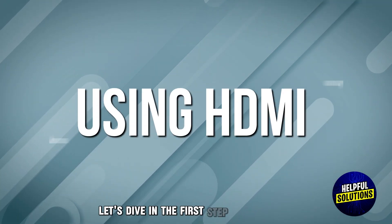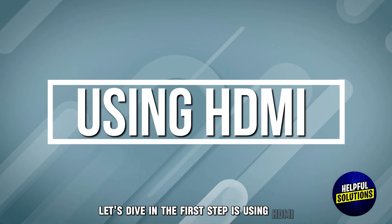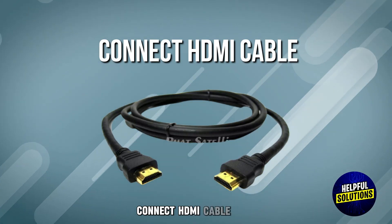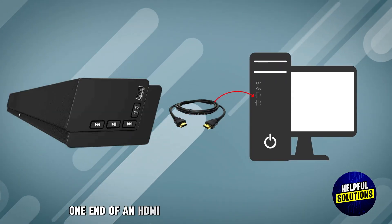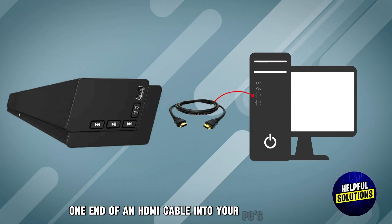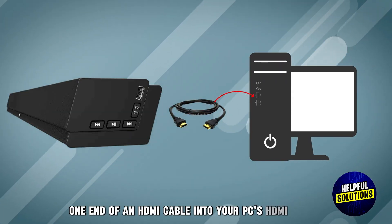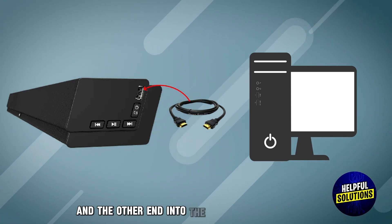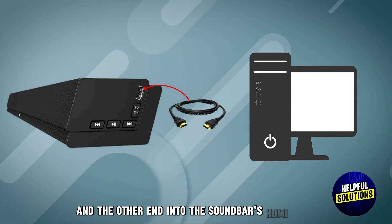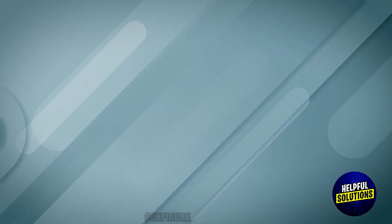The first step is using HDMI. Connect an HDMI cable by plugging one end into your PC's HDMI output and the other end into the soundbar's HDMI input.